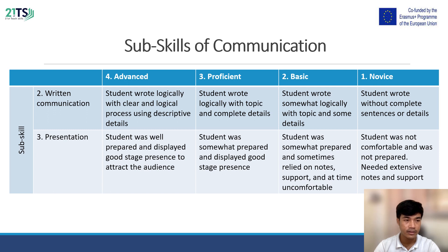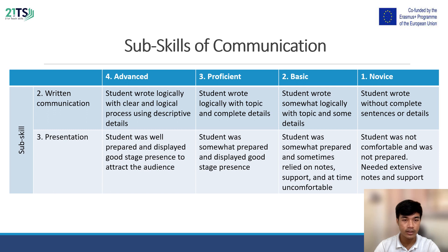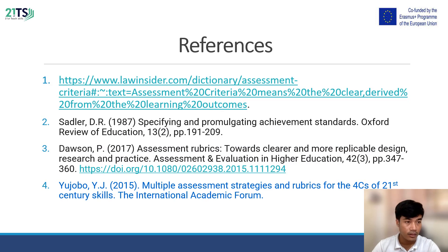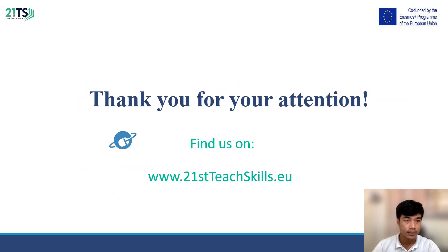Sub-skill three: Presentation. At the advanced level, students were well prepared and displayed good stage presence to attract the audience. At the proficiency level, students were somewhat prepared and displayed good stage presence. At the basic level, students were somewhat prepared but sometimes relied on notes and were at times uncomfortable. At the novice level, students were not comfortable, not prepared, and needed extensive notes and support. Here are some references for further information — please refer to the provided links. Thank you for your attention.